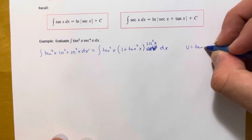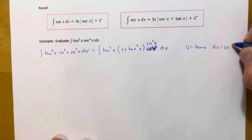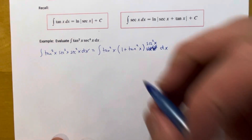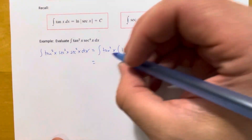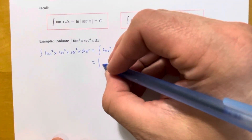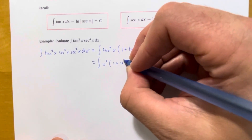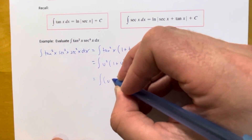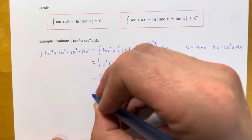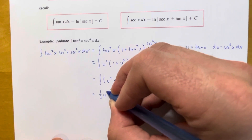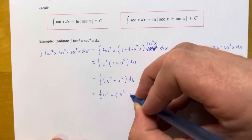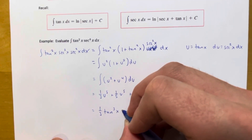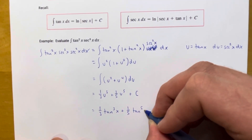Set u equal to tangent of x so that du equals secant squared of x dx — which we set up so du would automatically be there. Now everything is in terms of u: the integral of u squared times (1 plus u squared) du. Distributing gives u squared plus u to the fourth du, which integrates to one-third u cubed plus one-fifth u to the fifth plus c. Substituting back: one-third tangent cubed of x plus one-fifth tangent to the fifth of x plus c.